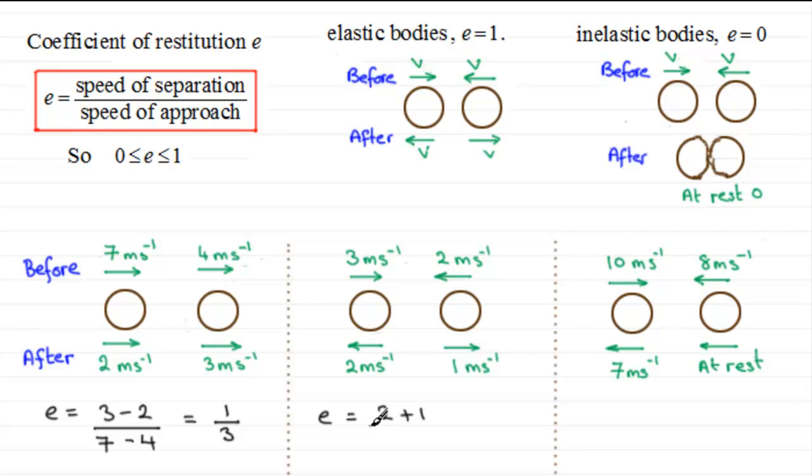And we compare this then with the speed of approach. Now they're coming towards one another in this situation, so there's going to be a greater relative speed. It's going to be 3 plus 2. So the coefficient of restitution here e is going to be 3 over 5, three fifths.